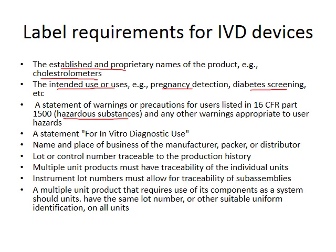IVD labels must also include a statement that says 'for in vitro diagnostic use,' the name and place of business of the manufacturer, packer, or distributor, and the lot or control number traceable to production history. Multiple unit products must have traceability of individual units, instrument lot numbers must allow for traceability of sub-assemblies, and a multiple unit product used as a system should have units with the same lot number or other suitable uniform identification.